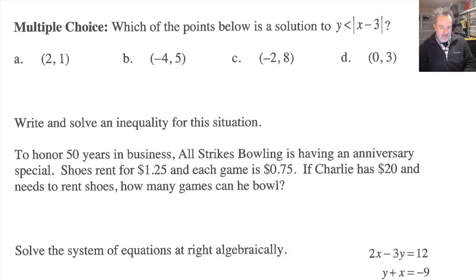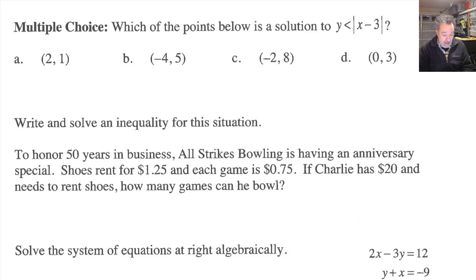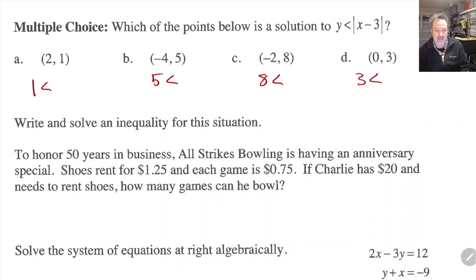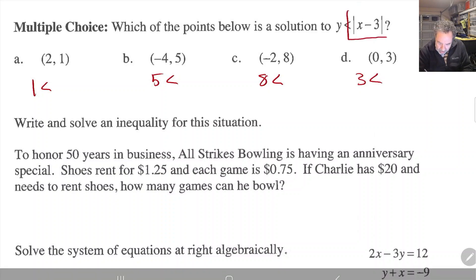Question 71 says: which of the points below is a solution to y is less than the absolute value of x minus 3? It's possible there's more than one answer. I'm going to set this up by writing y less than for each of the choices and quickly evaluate the following.